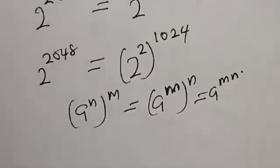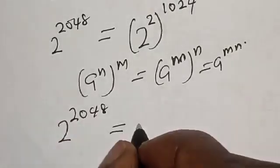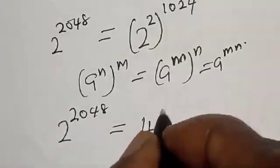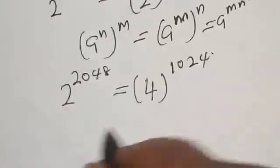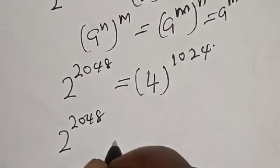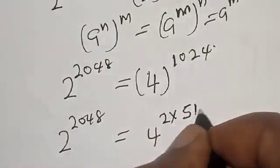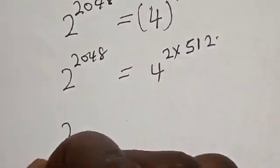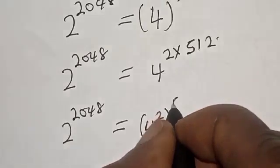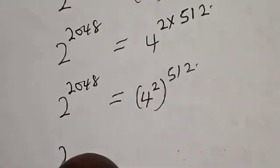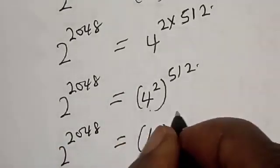Now 2 raised to power 2048 is equal to 2 squared raised to power 1024, which is 4 raised to power 512. Then 2 raised to power 2048 is equal to 4 squared raised to power 512, and 4 squared is 16, so 2 raised to power 2048 is equal to 16 raised to power 512.